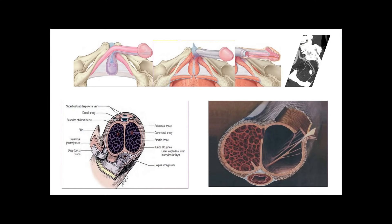So before we dive into the topic, I want to briefly remind you and explain the anatomy of the penis. It's very important for us to understand how it works so we can understand how we can help you. So essentially, if you look at the top here, the penis is formed of multiple different parts. The two main different parts are called the erectile system or apparatus.